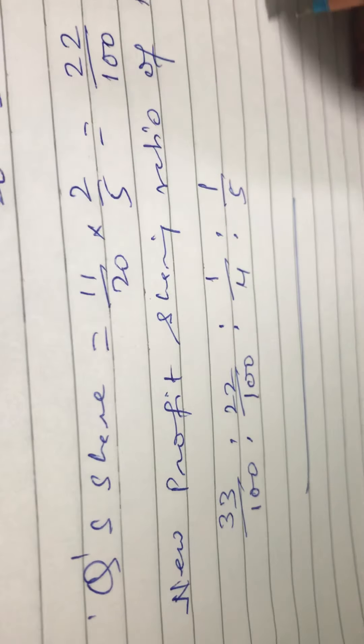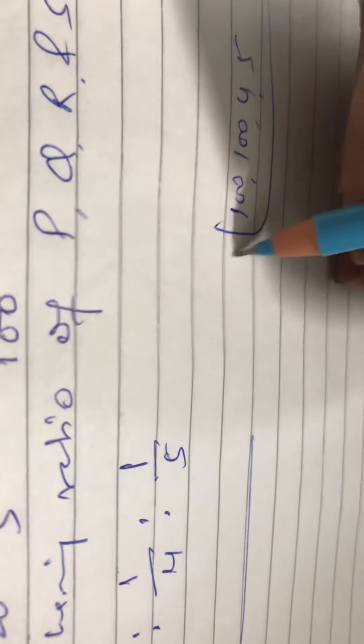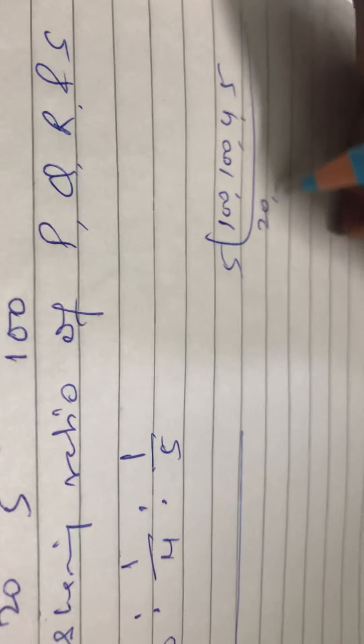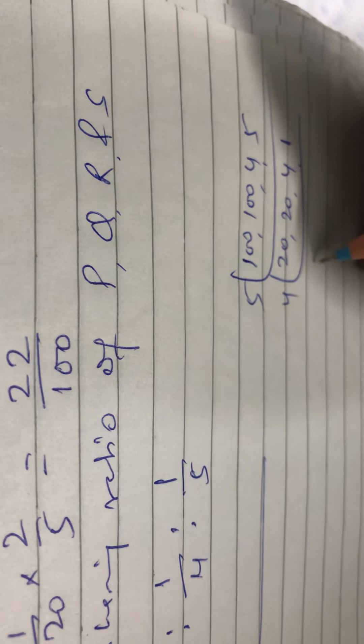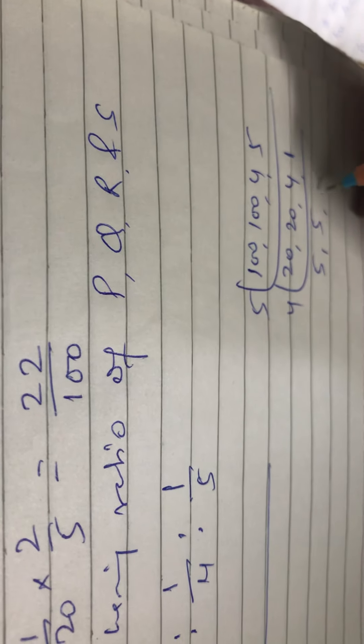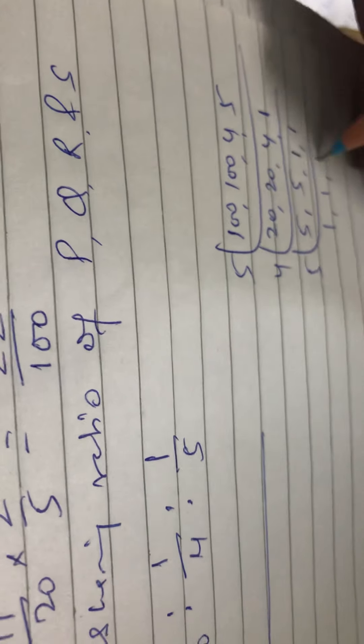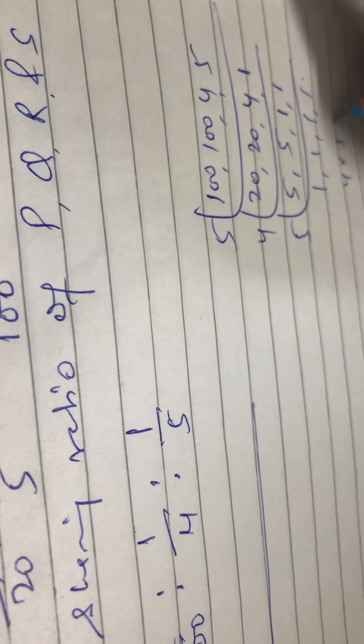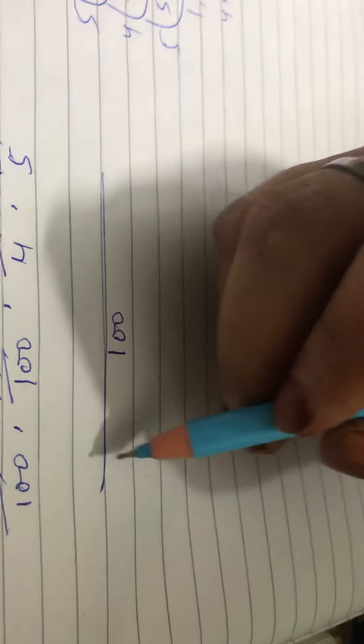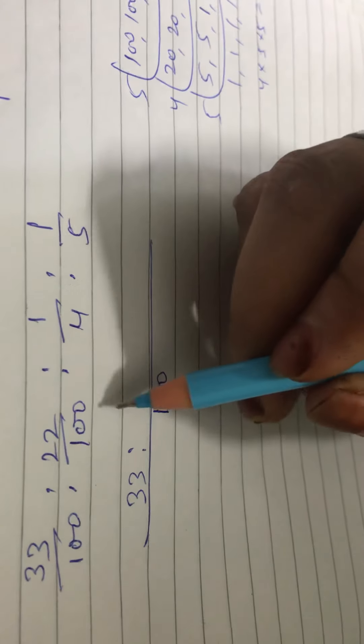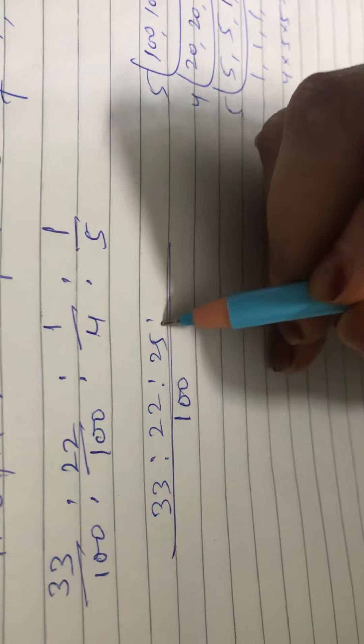LCM will be 100. 100, 4, 5, 5, 5, 20, 2, 4, 5, 1 and 1. So 4 into 5 into 5, base will be 100. So 33 is to 22 is to 25 is to 20.